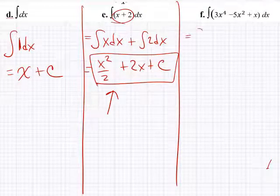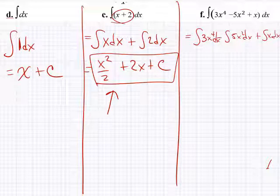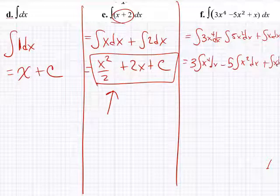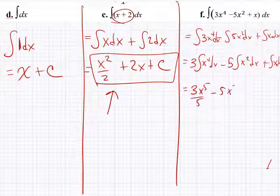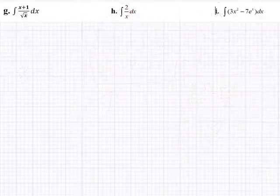We have a very easy way of working with polynomials. For the integral of 3x to the 4th minus 5x squared plus x dx, pull the constants out: 3 times integral of x to the 4th, minus 5 times integral of x squared, plus integral of x. These are three power rule problems, giving 3x to the 5th over 5, minus 5x to the 3rd over 3, plus x squared over 2 plus c. Again, if unsure, take the derivative of this.